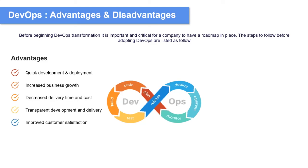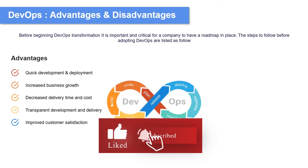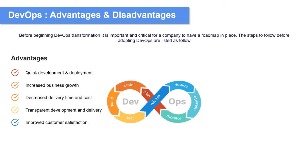Another advantage of using DevOps is improved customer satisfaction. DevOps helps your organization improve customer experience and satisfaction, thanks to its continuous feedback phase, which allows developers to take into consideration customer feedback by building new features that meet their expectations. Thanks to the continuous integration phase, new features are integrated and committed to the production environment in a timely manner for customers to benefit from them.